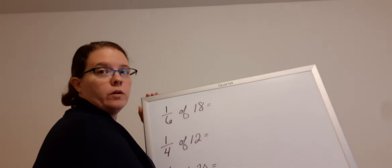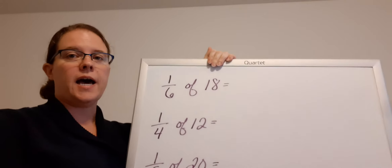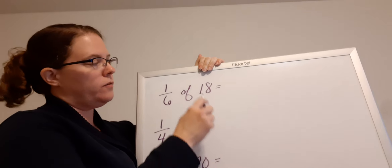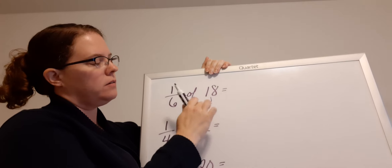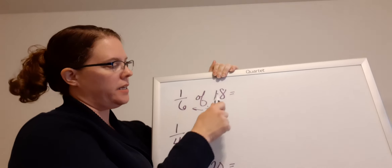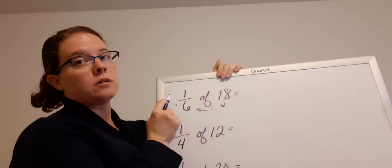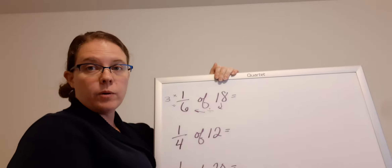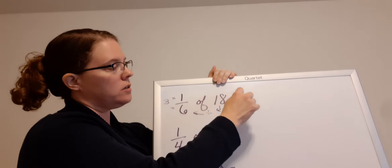All right, so you may remember doing these in class together. So 1/6 of 18. Remember what we did first — we went from 18, we divided by our denominator. So 18 divided by 6 equals 3. Then we multiplied by our numerator. So 3 times 1 equals 3.